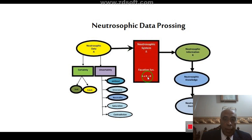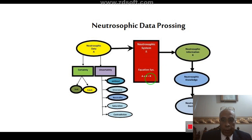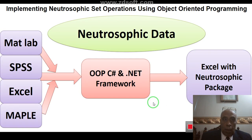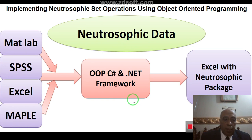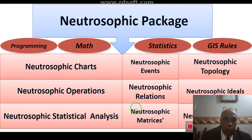The equation A∘R = B, where A is the neutrosophic inputs, R is the system processing for data, and B is the neutrosophic outputs. From neutrosophic information to neutrosophic knowledge to neutrosophic decision, this can be implemented using object-oriented programming. Neutrosophic data can be processed using tools such as MATLAB, SPSS, Excel, and MAPLE with a neutrosophic package covering programming, mathematics, statistics, and GIS rules.